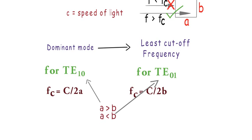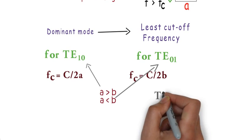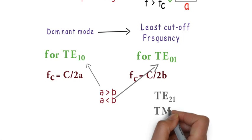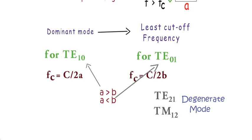If two different modes have the same cutoff frequency, for instance TE21 and TM21 have the same cutoff frequency then they are called degenerate modes.